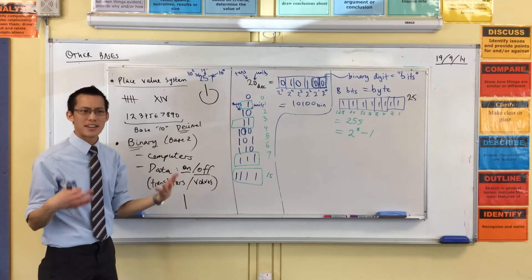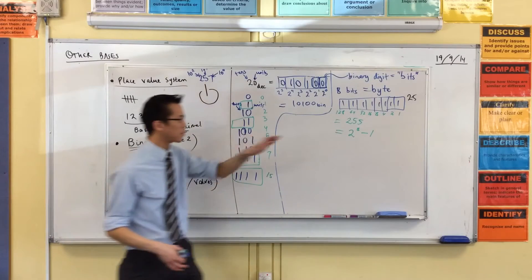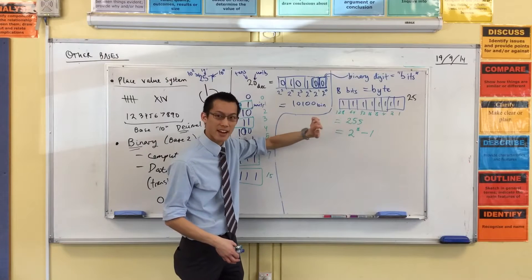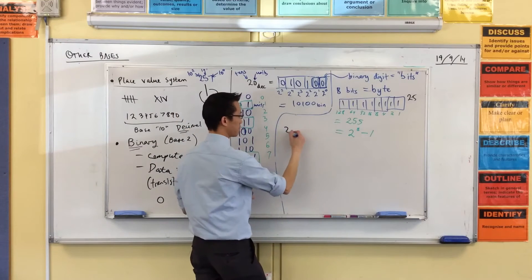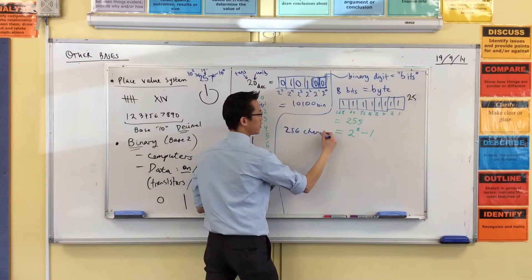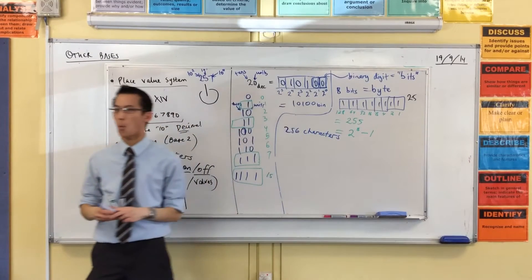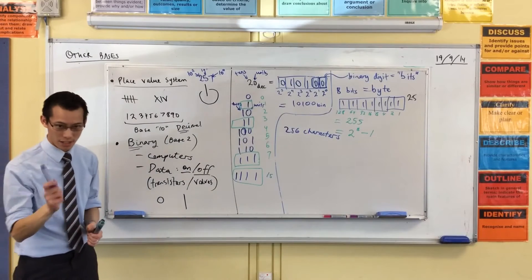So, computer scientists and developers wanted to be able to take these 256 characters and represent them in a more concise way, right? So think about this with me.